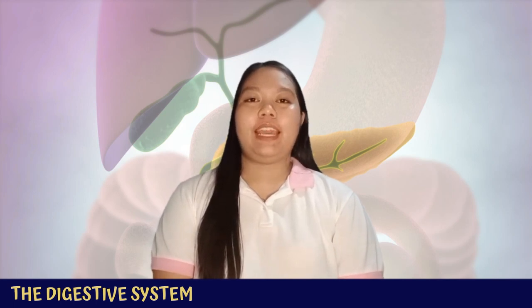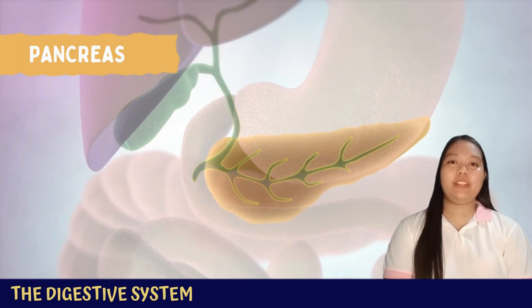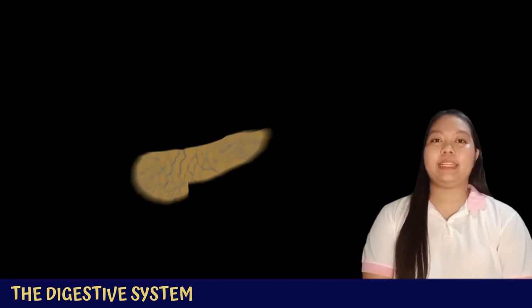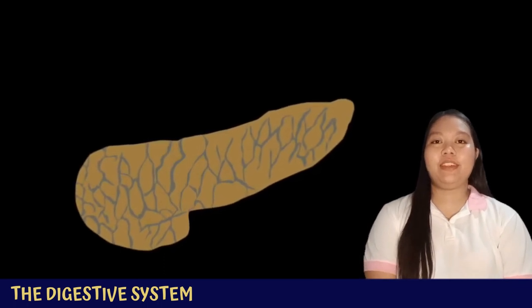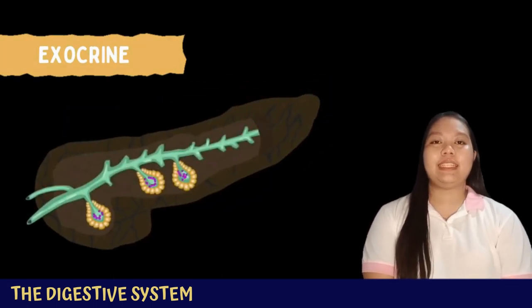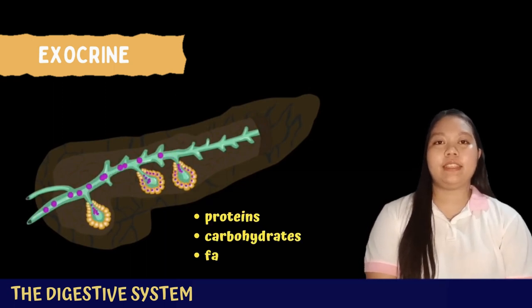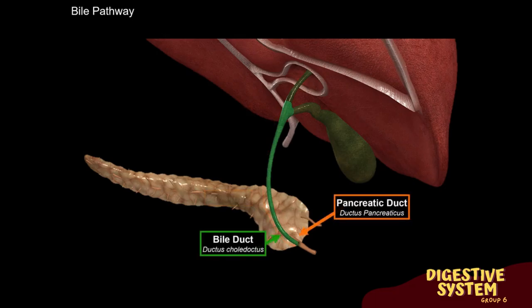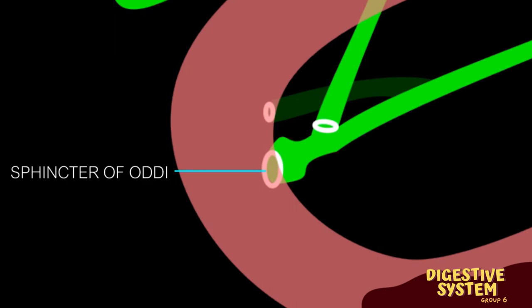Among the accessory organs, the pancreas is an elongated retroperitoneal organ lying posterior to the stomach between the duodenum and spleen. It acts as both an exocrine and endocrine gland. The exocrine gland secretes pancreatic juice containing enzymes that break down proteins, carbohydrates, and fats. The exocrine pancreas includes the sphincter of Oddi, also known as the hepatopancreatic sphincter — a muscle at the junction of the bile and pancreatic ducts — which regulates release of bile and pancreatic juice into the duodenum and prevents reflux.